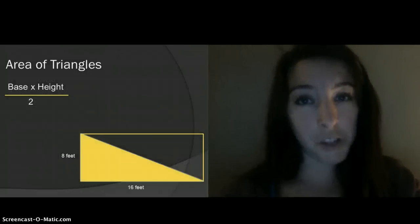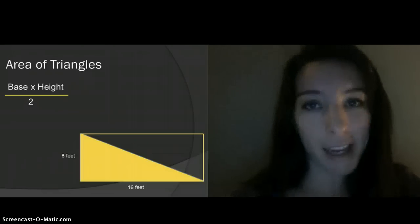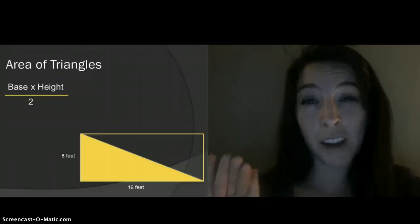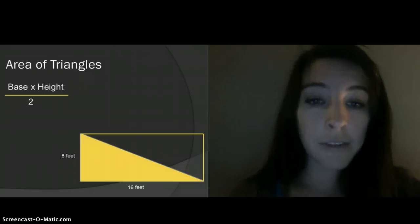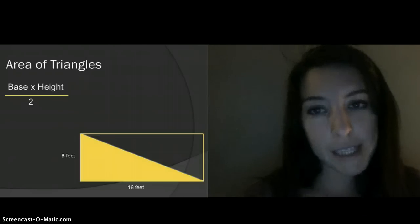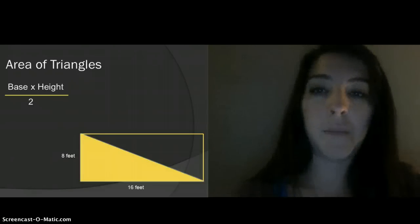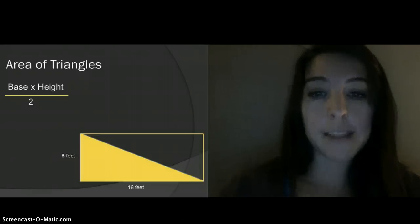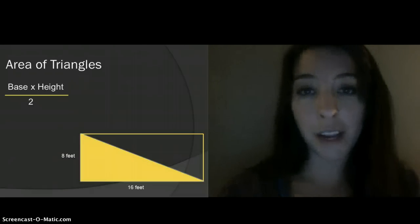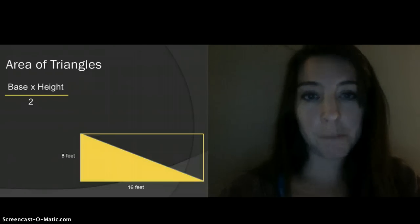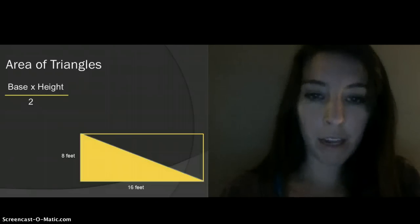So when we talk about area of triangles, instead of saying length times width like we do with rectangles, we say base times height. It makes it a little bit easier when we start talking about triangles that aren't right triangles. But for right now, we can use the exact same measurements — 8 feet times 16 feet gives us 128 square feet, which we found out when we figured out the area of the whole play space. Now, if we divide that by 2, it gives us 64 square feet. And that's the area of that triangle. So for any triangle, base times height divided by 2 gives you the area.